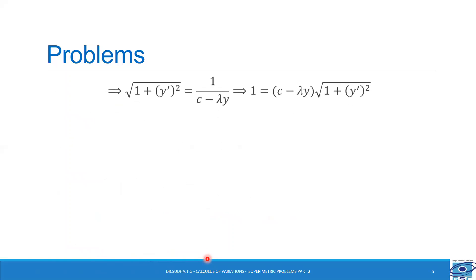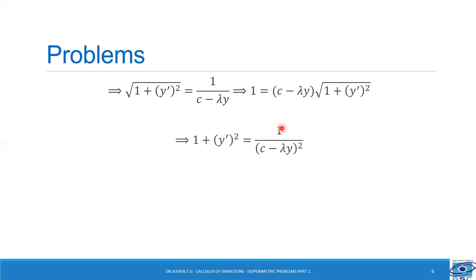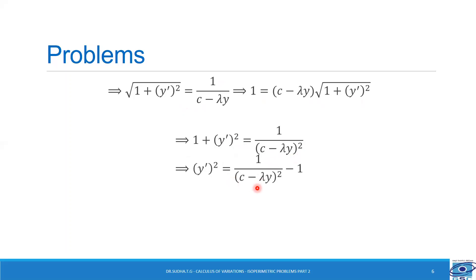So we need to solve this expression for y'. Root of 1 plus y' square will be equal to 1 over c minus lambda y. On cross multiplication we get 1 equal to c minus lambda y into root of 1 plus y' square. On squaring both sides and simplifying we get 1 plus y' square equal to 1 over (c minus lambda y) whole square. Simplifying the right hand side gives 1 minus (c minus lambda y) whole square divided by (c minus lambda y) whole square.